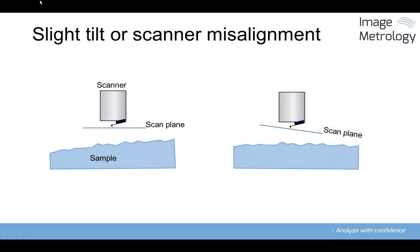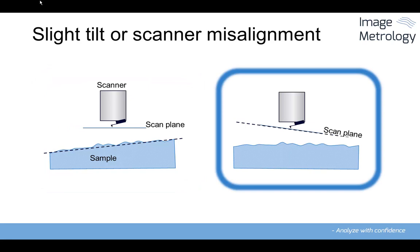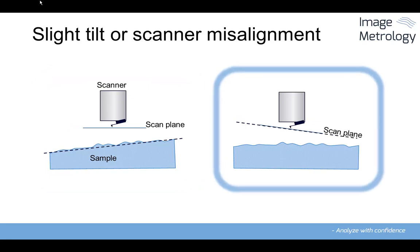Tilt is either caused by a misalignment between the surface plane of the sample and the scanner or objective, or due to internal uncompensated misalignment in the scanner causing it to scan in an angle relative to the mechanics.